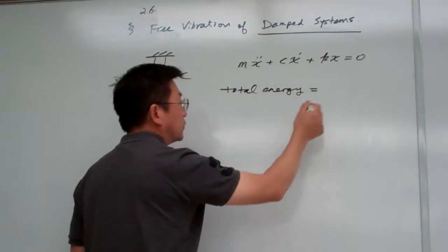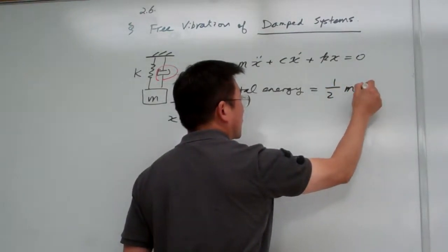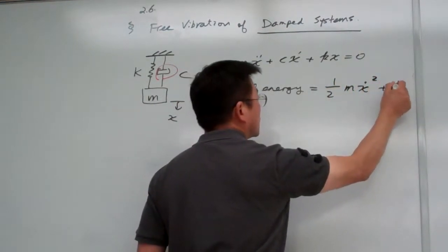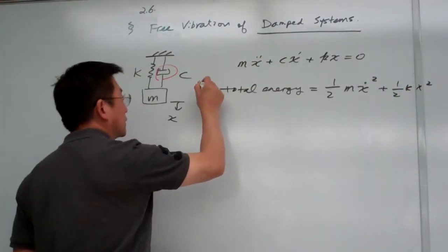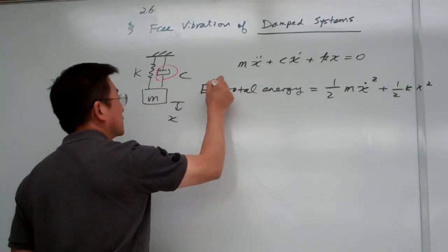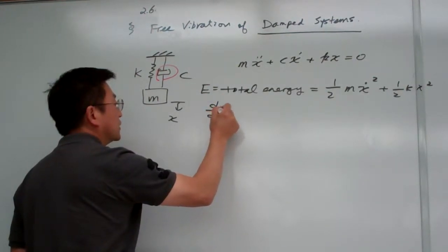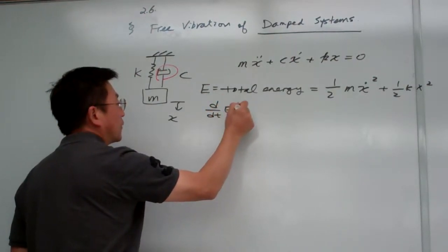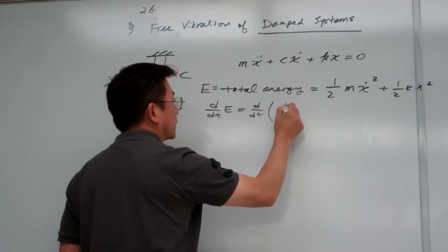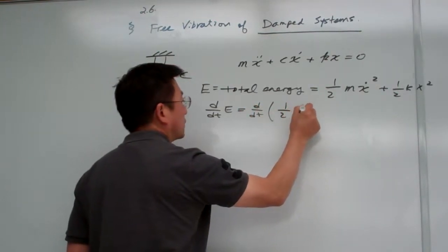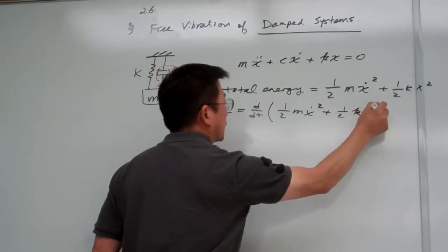For this simple example we look at the kinetic energy plus the potential energy — let me call this E. So we look at dE/dt to see what happens. This is (1/2)m·x-dot squared plus (1/2)k·x squared.